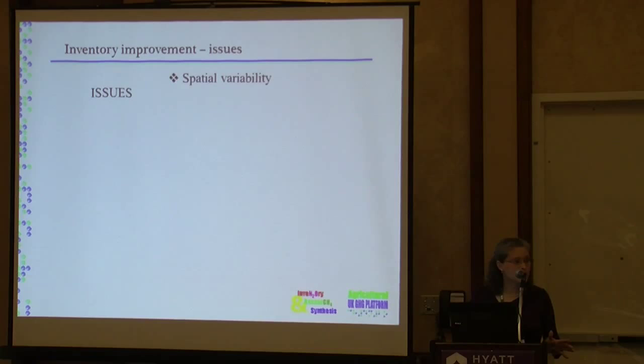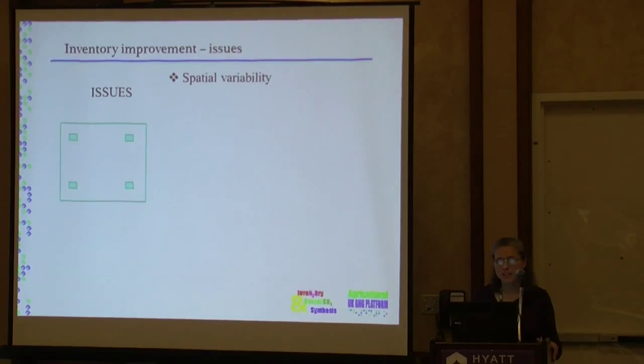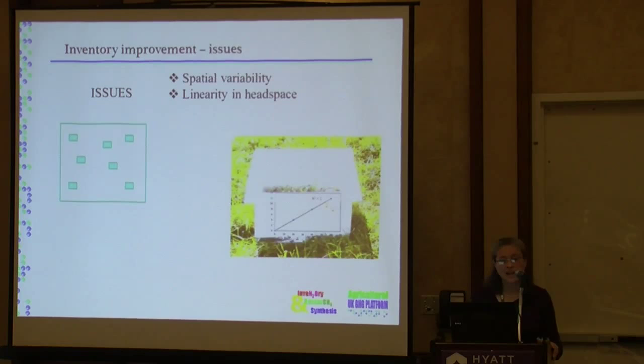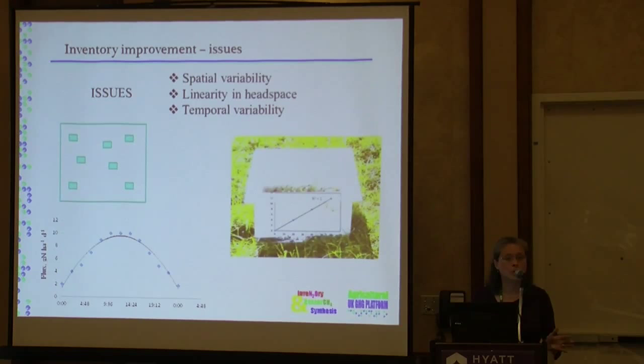What issues did we face when planning these measurements? We heard a lot about spatial variability — do we use fewer or more chambers? How do we deal with linearity in the headspace? How many samples do we take from the headspace? There is also temporal variability — what time of day do we take samples? Are we measuring at the maximum or at a time representative of the daily mean? And how do we estimate the cumulative fluxes?